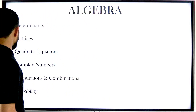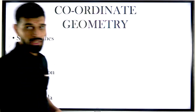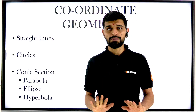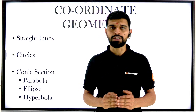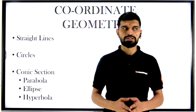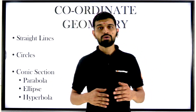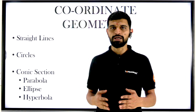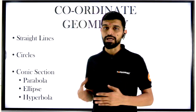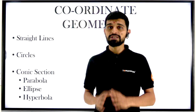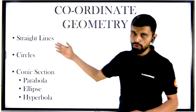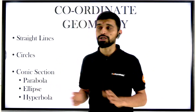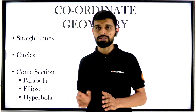Next, we're talking about coordinate geometry. In coordinate geometry, you have to specifically prepare straight lines and circles at least. If you are relatively comfortable, you can go for conic sections as well. Conic section preparation can be broken down — you can be comfortable with hyperbola, ellipse, and parabola depending on your readiness. Still, at minimum, you can go for straight lines and circles. If you have completed straight lines and circles, you will be able to attempt 2 questions from these topics.